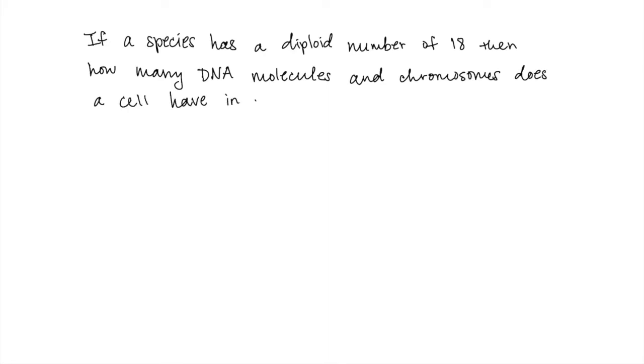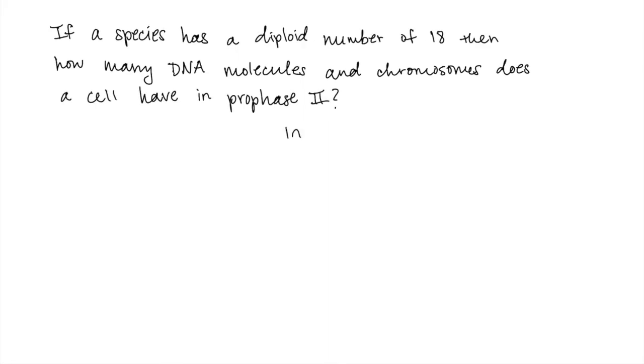And for the next example, a question asks: if a species has a diploid number of 18, then how many DNA molecules and chromosomes does a cell have in prophase II? So first, we should remember that in prophase II, the cell is haploid. And we can find the number of chromosomes by using what is given to us that 2n equals 18 because the diploid number is 18. And divide by 2 on both sides and solve for n, which equals 9.